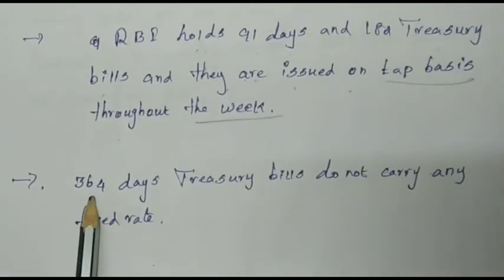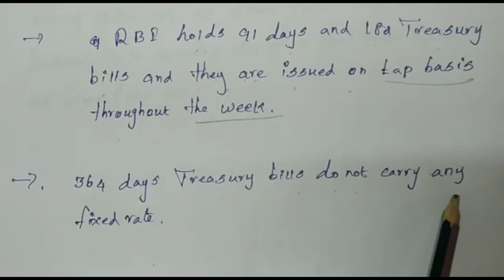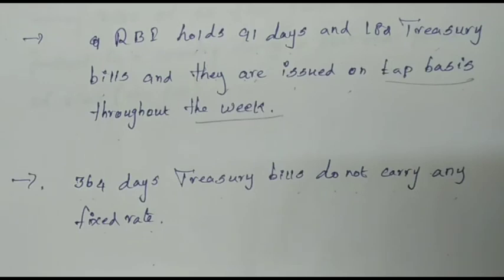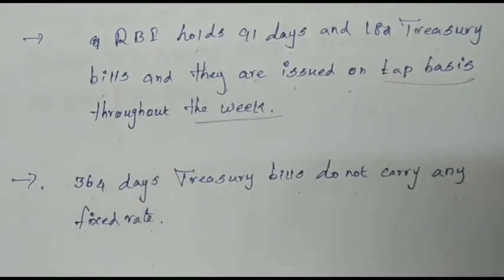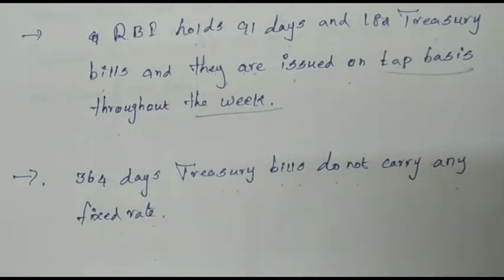Third point: the 364-day bills do not carry any fixed rate of interest. 91-day bills have a fixed discount rate like 4%. The 364-day bills have a fluctuating discount rate, not a fixed rate of interest.